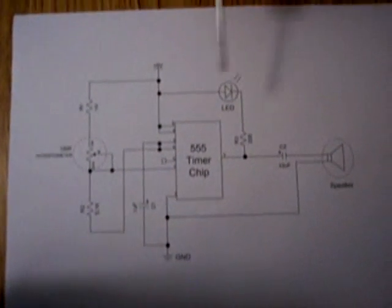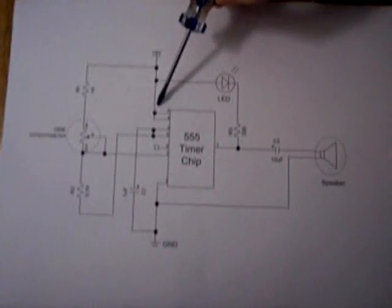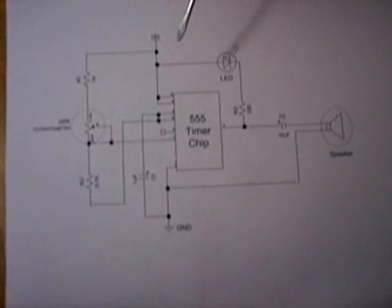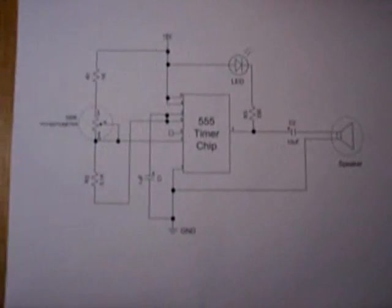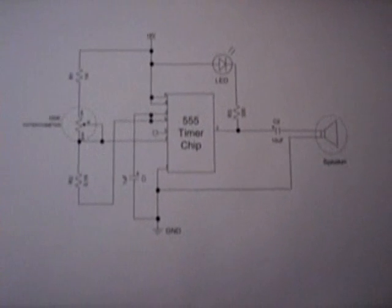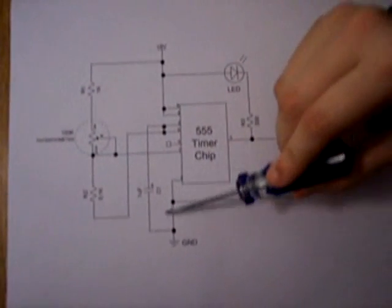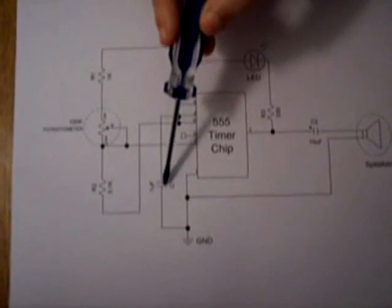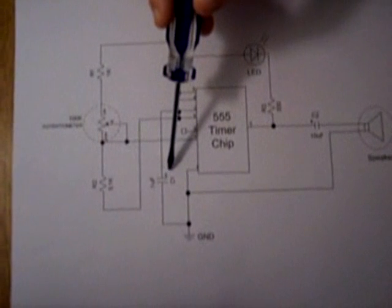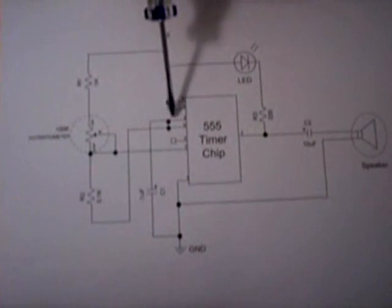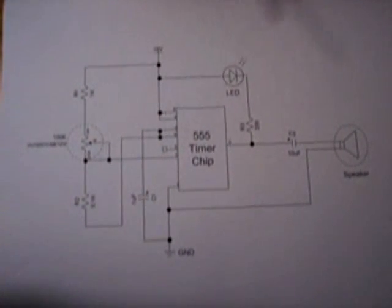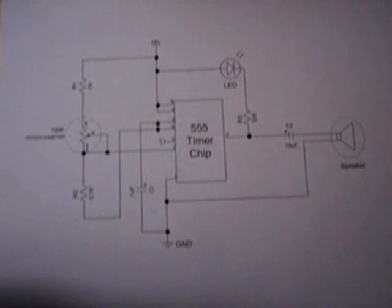There are two connections that should be connected directly to power. This is pin 8 and pin 4. Four connections should be connected to ground. Pin 1 is connected directly to ground. Pins 2 and 6 are connected to ground through the 0.1 microfarad capacitor. Since pin 2 and pin 6 are electrically connected, it does not matter which pin connects through the capacitor to ground.